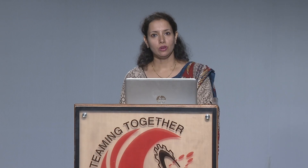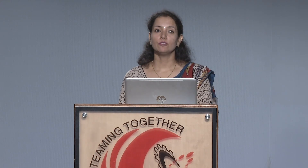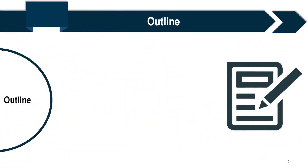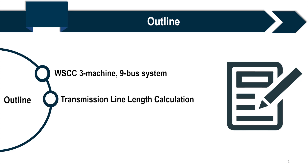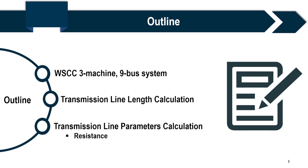Welcome to the second module on Modeling of Multi-Machine 9-Bus System using MATLAB Simulink. In today's session, we are mainly going to cover the following points. Firstly, we will see a 3-Machine 9-Bus System and then various parameter calculations of the transmission line, including transmission line length, resistance, inductance, and capacitance.